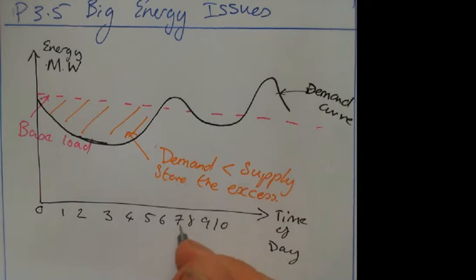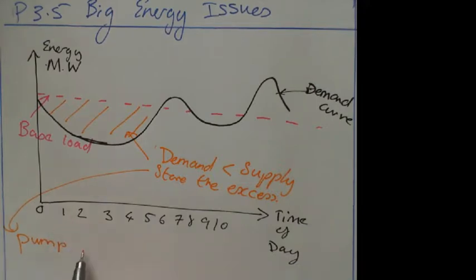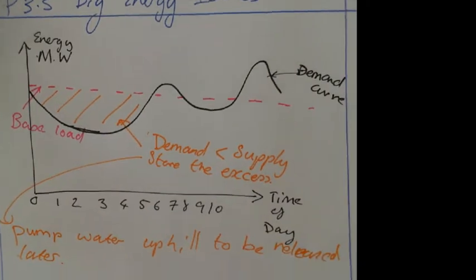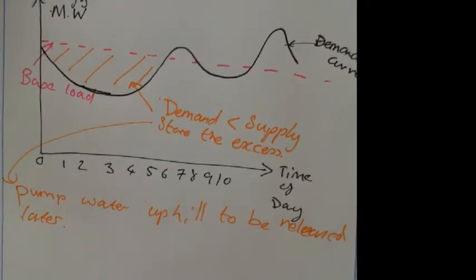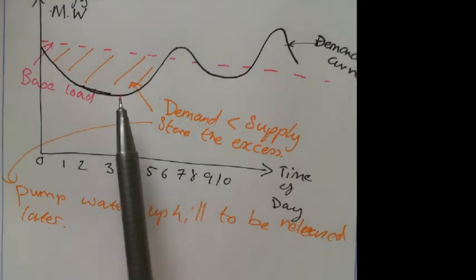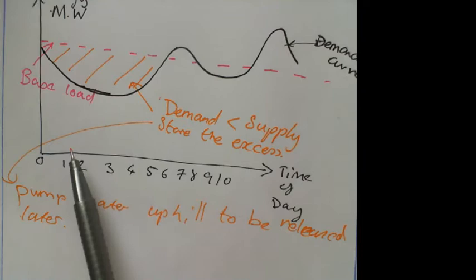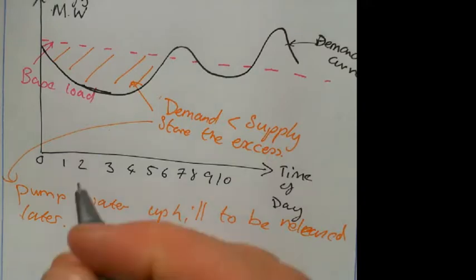And this main way that we do that is something called pumped storage. And what that is is when you pump water uphill to be released later. Okay, so you pump the water up the hill when you've got too much energy using the electricity that you've got. So here, look, you've got the base load is above the demand, so you've got some spare. So you use that spare electricity to pump water uphill.